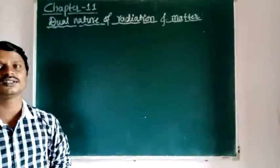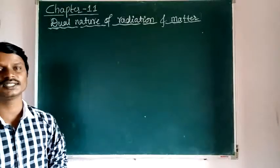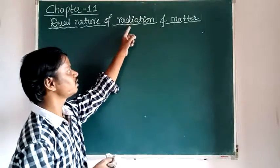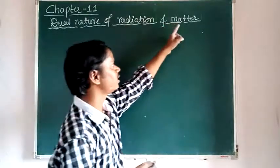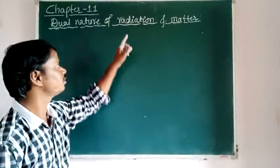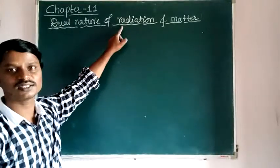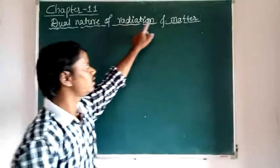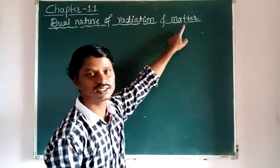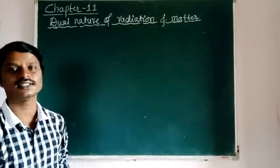What do you mean by dual? Dual is nothing but 2. Radiation has 2 natures and also matter has 2 natures. So, the radiation has wave nature and particle nature. And also the matter has wave nature and particle nature.